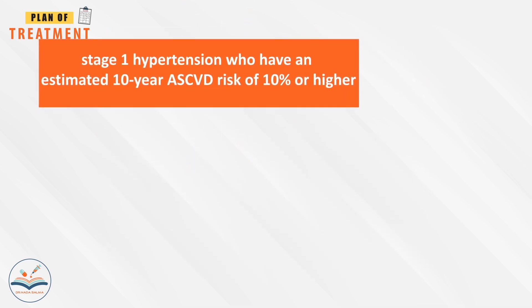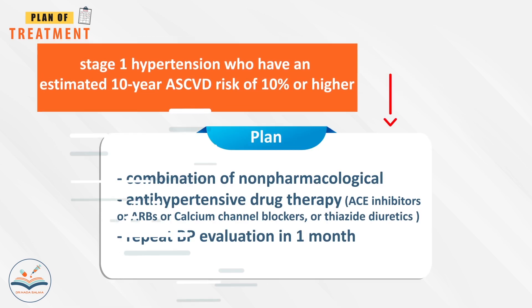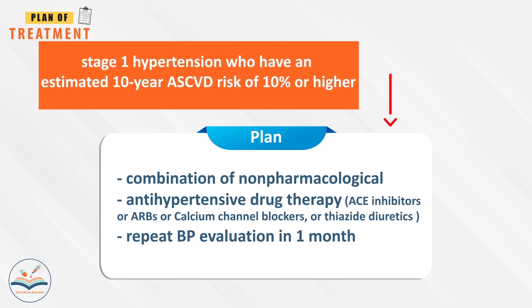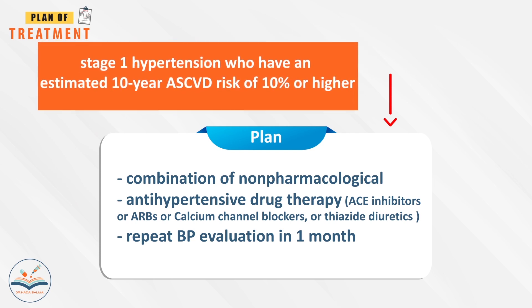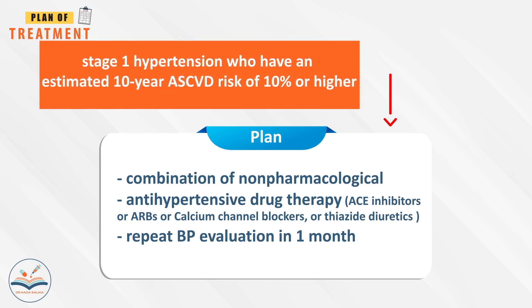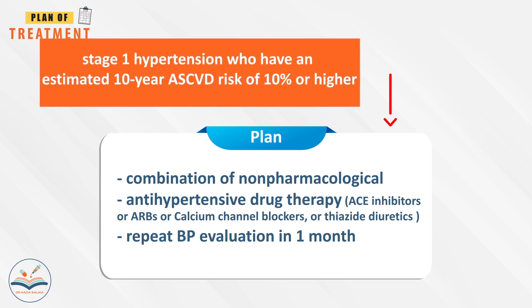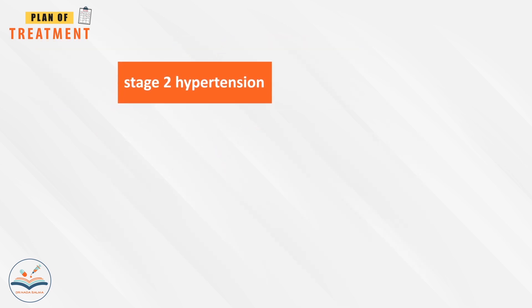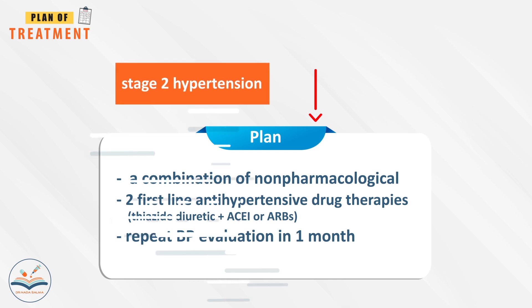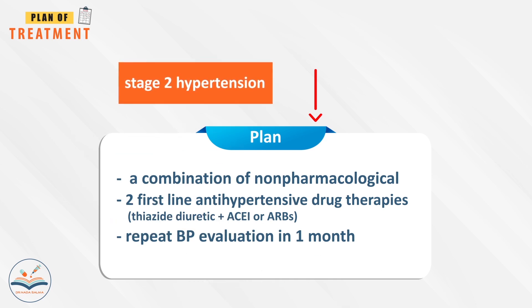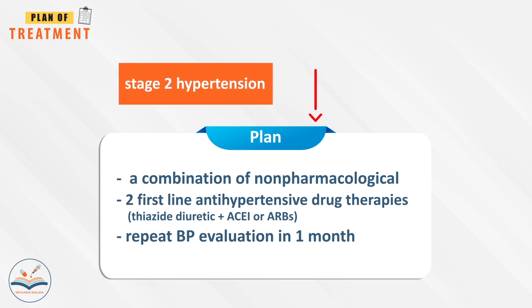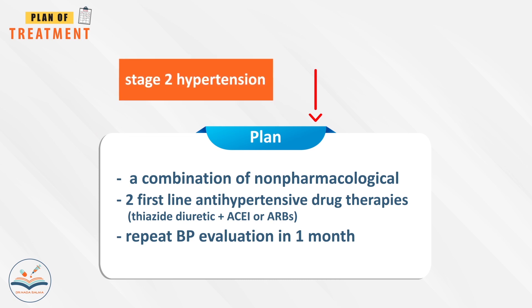In stage one hypertension with an estimated 10-year ASCVD risk of 10% or higher, treat with a combination of non-pharmacological therapy plus antihypertensive drug therapy: ACE inhibitors or ARBs, or calcium channel blockers, or thiazide diuretics, and repeat blood pressure evaluation in one month. In stage two hypertension, treat with non-pharmacological therapy plus two first-line antihypertensive drug therapies: thiazide diuretics plus ACE inhibitors or ARBs, and repeat evaluation in one month.